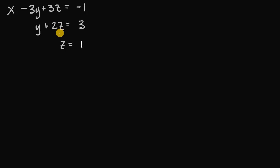Here I have a system of linear equations already written out. You'll notice that there are three equations and three unknowns: x, y, and z. It's also written in a very special form called row echelon form, and we'll get to what that is in a minute. But first I want to show you how we can use back substitution to solve for the unknown variables x, y, and z.